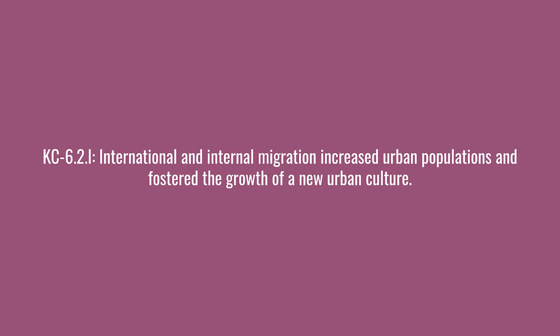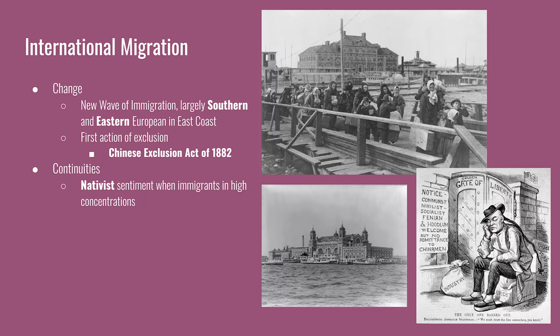The next key concept: international and internal migration increased urban populations and fostered the growth of a new urban culture. The change here is that the new wave of immigration was coming largely from southern and eastern Europe, whereas during the middle of the 19th century it was coming mostly from Ireland and Germany. Nativists also achieved their first act of exclusion of an immigrant group through Congress with the Chinese Exclusion Act of 1882. The nativist sentiment was the same as before, but it had never risen to the level where a specific group was barred from entry.